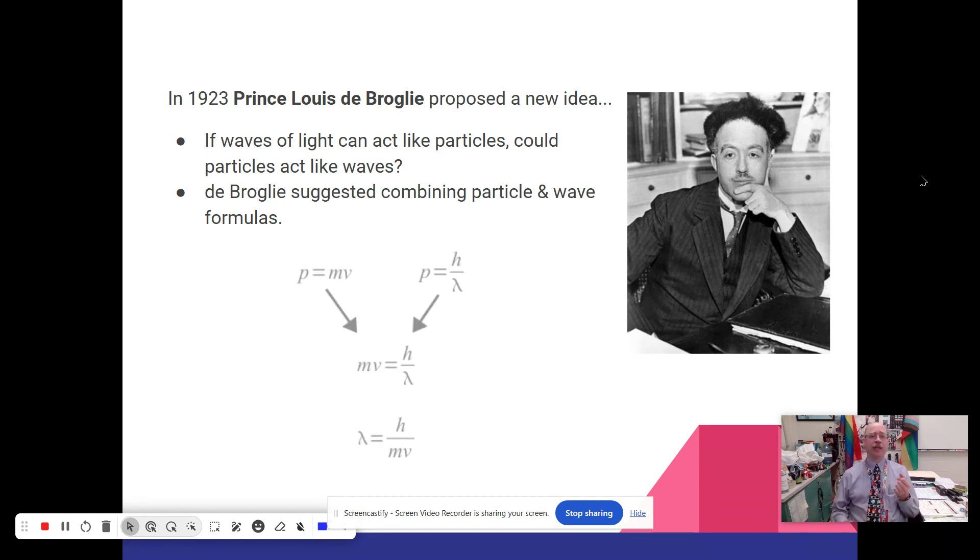Now what he's doing is taking classical momentum p equals mv and he's combining it with this momentum formula that Einstein had: momentum equals Planck's constant divided by wavelength. He says let's just put them together and solve it for lambda. So we get this formula that says lambda equals Planck's constant divided by mass times velocity.